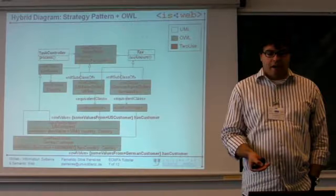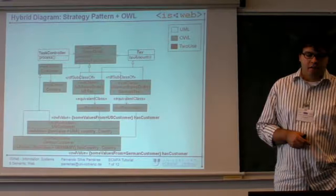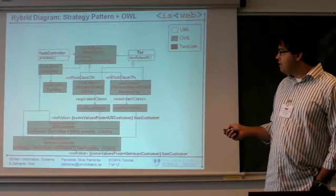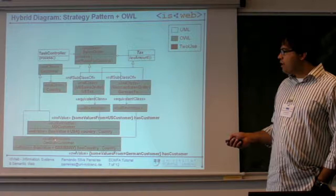Then you extend your UML model and add more annotations. You say what is a GermanTax and what is a USTax. You go and define this: a GermanTax is equivalent to a restriction on the class hasCustomer, and hasCustomer must be a GermanCustomer. And what is a GermanCustomer? A GermanCustomer is a customer that hasCountry Germany.